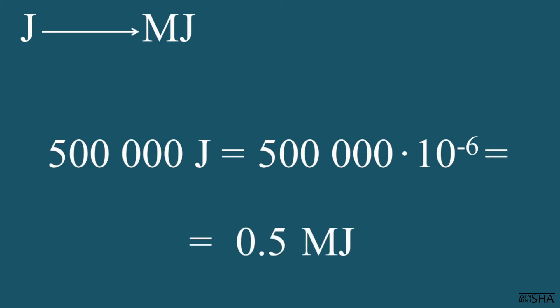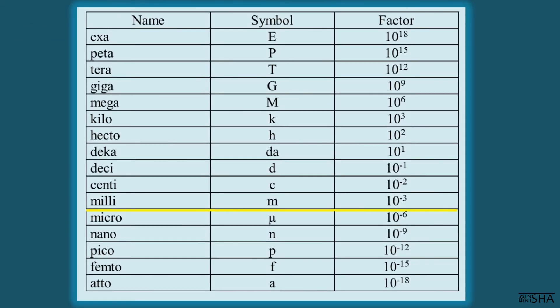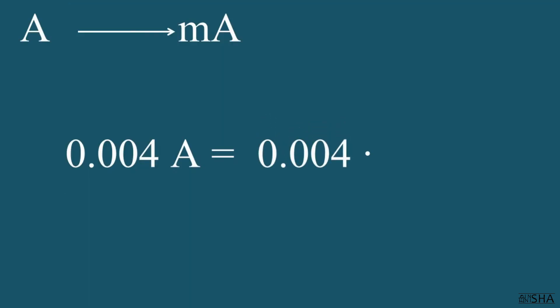If you didn't understand how we've done this trick, do watch the first episode of the course. Everything will become clear at once. And we move on. 0.004 amperes need to be converted to milliamperes. We write down 0.004 without changes. Then we change the sign of prefix milli's exponent to the opposite one and multiply by 10 to the 3rd power. So we get 4 milliamperes.